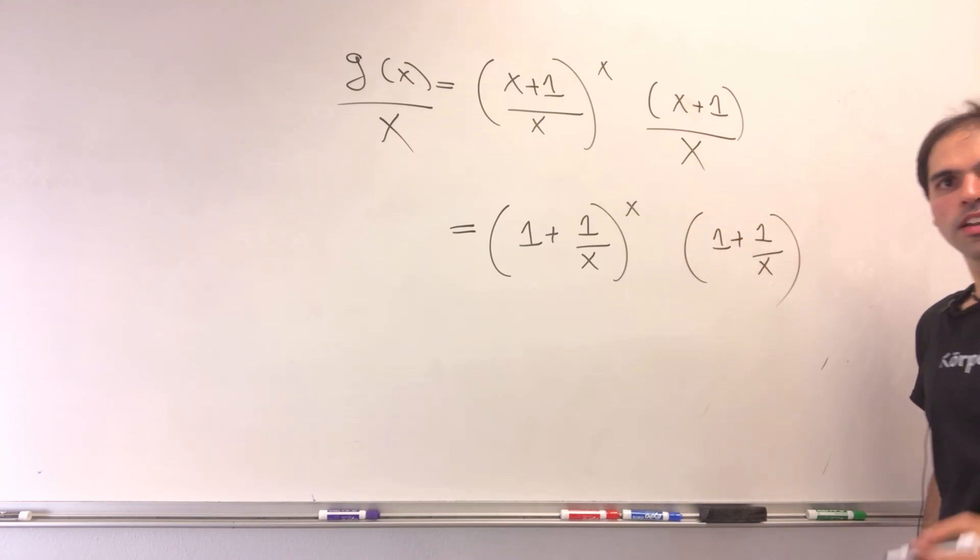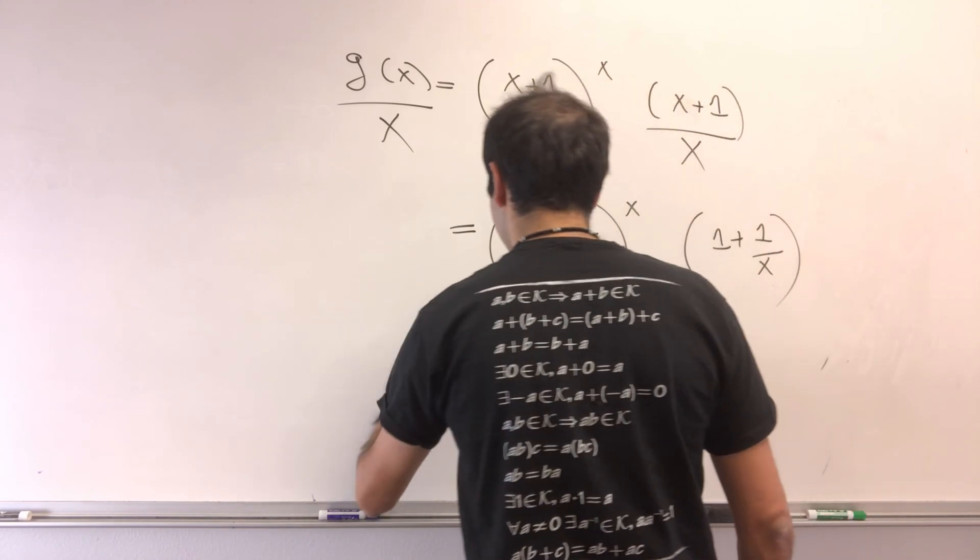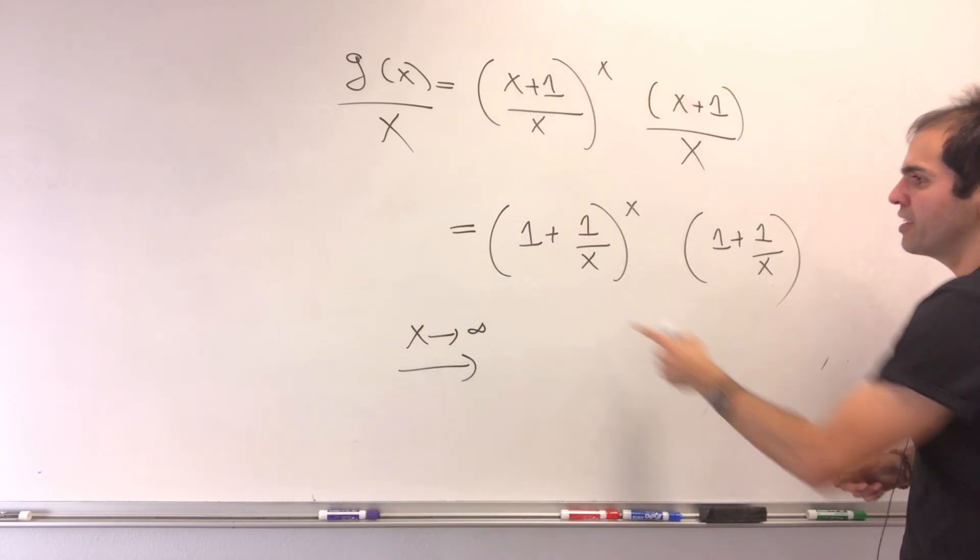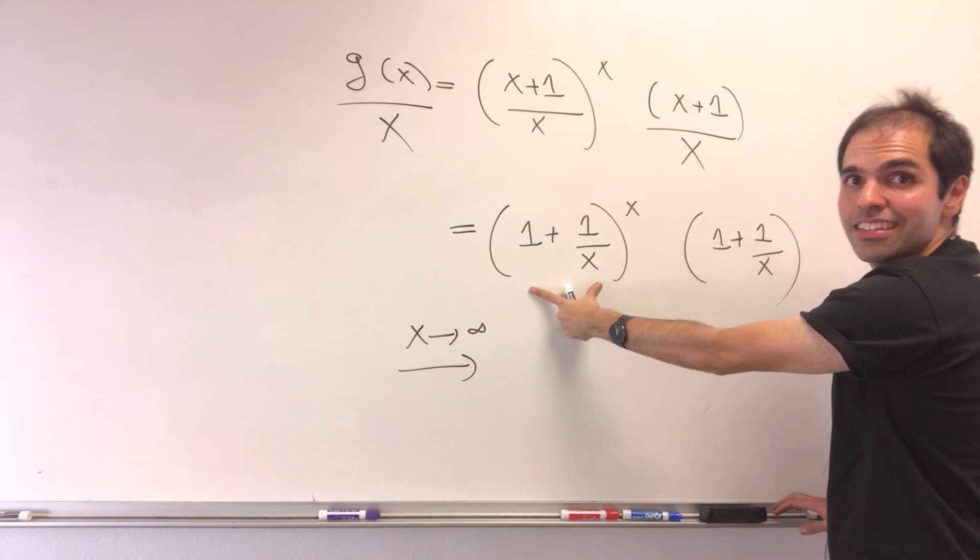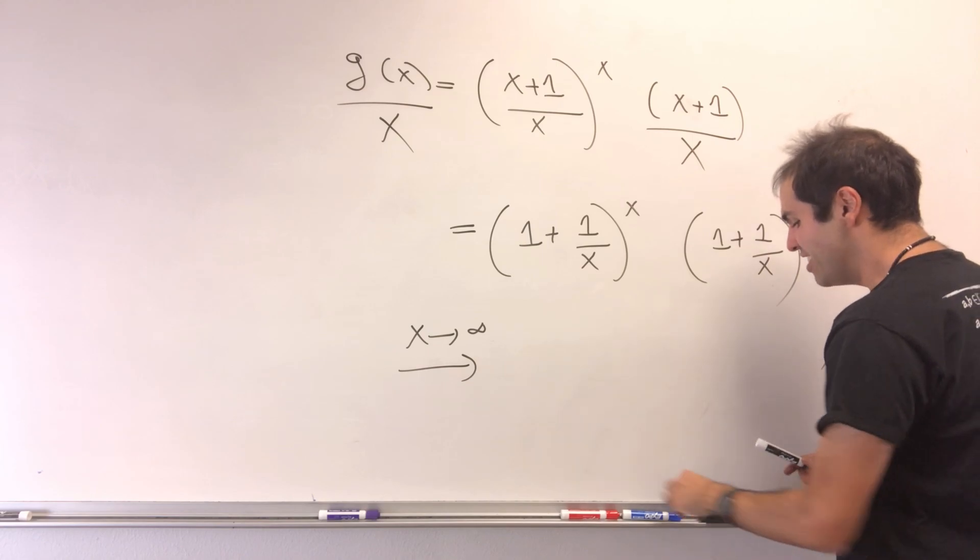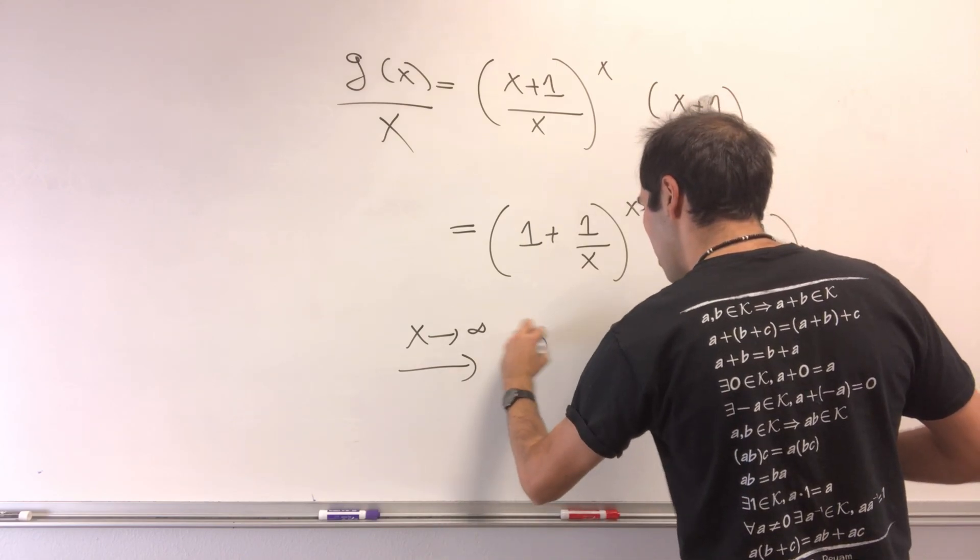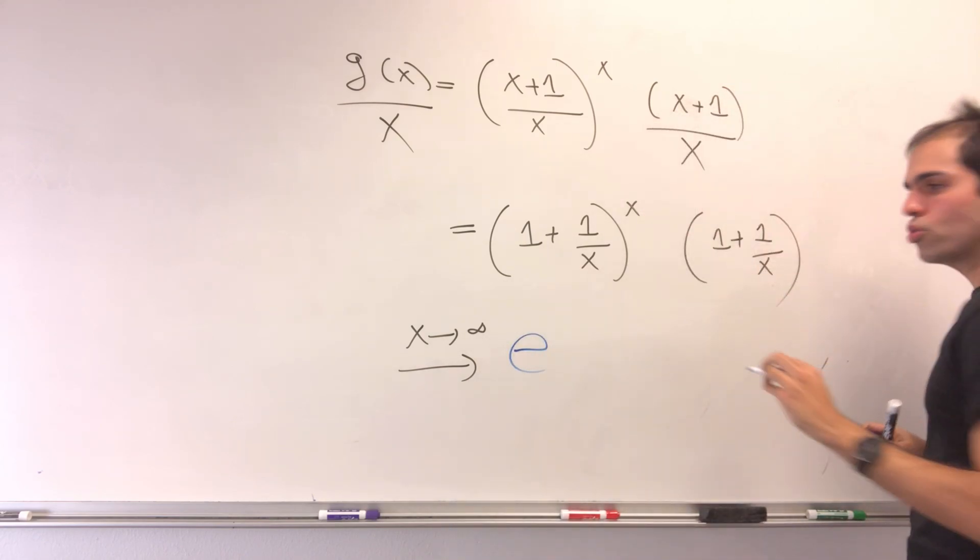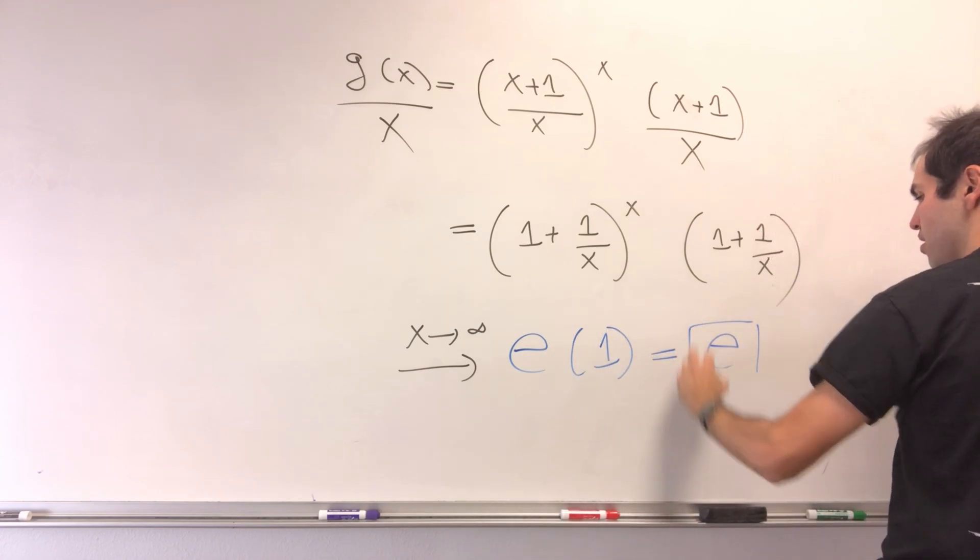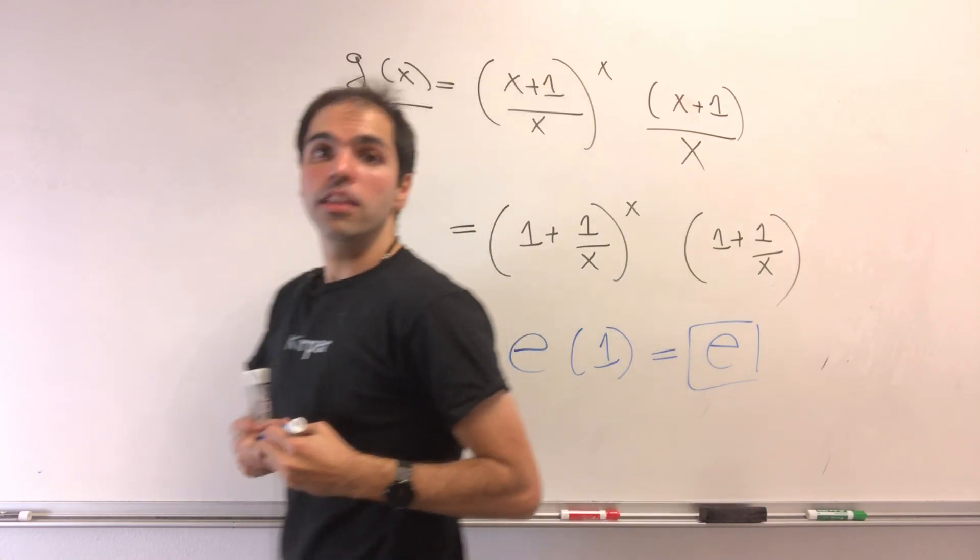And, last but not least, let x go to infinity. All right, then what happens to this limit? So it is a famous limit, where you have 1 to the infinity, which is just e. This limit is just 1, so e times 1 equals e. And this is why the limit is e.